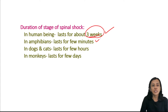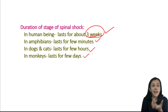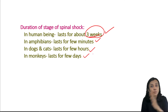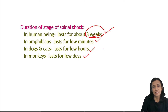In amphibians, spinal shock lasts only a few minutes; in dogs and cats, a few hours; in monkeys, a few days. In higher animals, the entire nervous system is integrated as a functional unit, so damage to any one part disturbs the functional activity of all systems. This phenomenon is known as diaschisis.